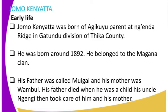His father was called Mwigai and his mother was Wambui. His father died when he was at a tender age, and he grew up with his uncle in Ngenda, who took care of him and his mother. So his father died during Jomo Kenyatta's early years, and he had to be brought up by his uncle, as was the tradition in the past.